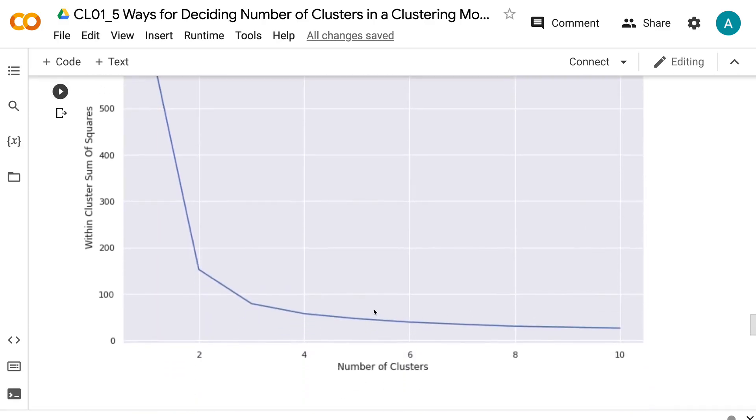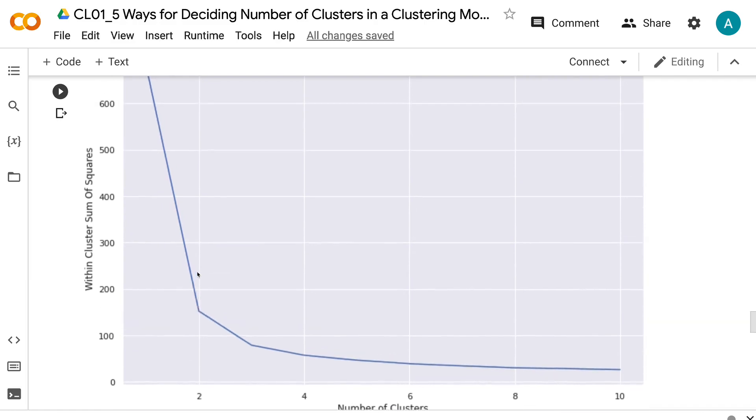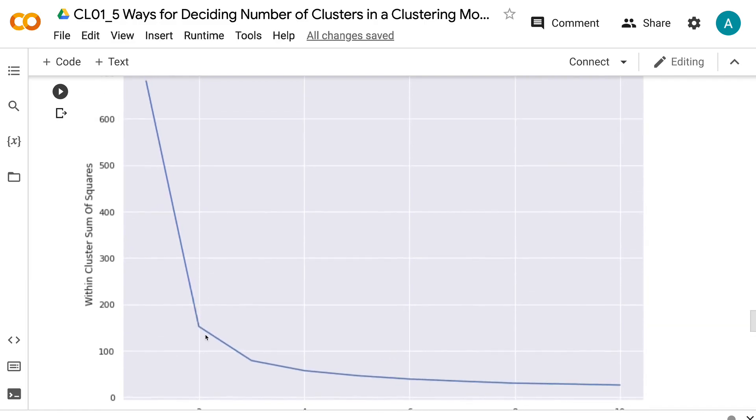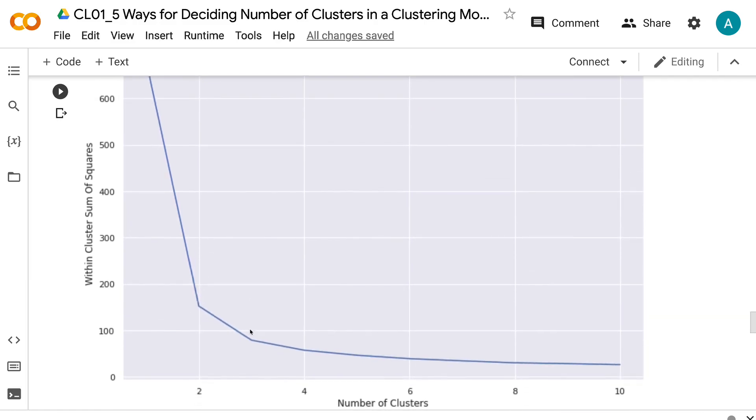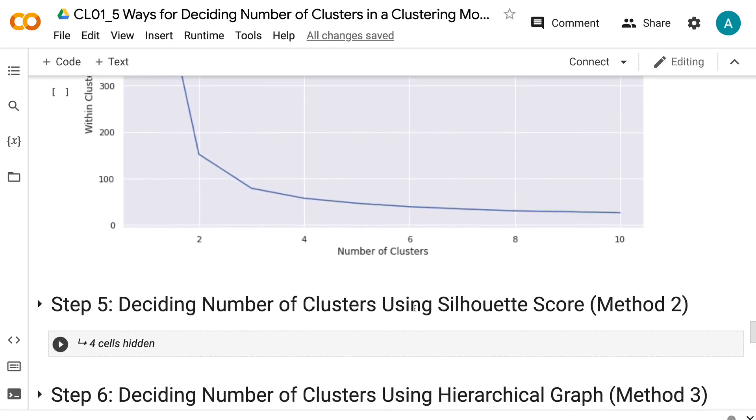From the visualization, we can see that the biggest decrease in within-cluster sum of squares happens at two clusters, and there is a relatively large decrease from two to three clusters. The decreases are small for the models with the number of clusters greater than three. Therefore, we can conclude that the optimal number of clusters is probably two or three.